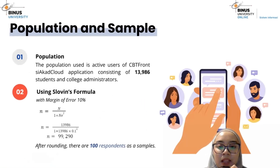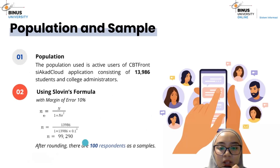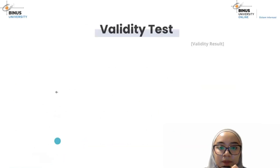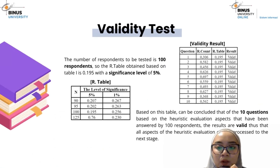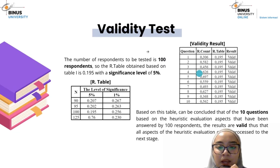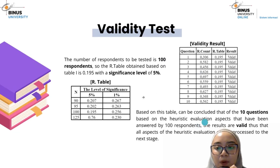From the population and sample that have been collected and calculated, 100 respondents were obtained using the Slovin's formula. Based on the validity test table, it can be concluded that all 10 questions based on the heuristic evaluation aspects forwarded to the 100 respondents are valid. Thus, those aspects can be processed to the next stage.